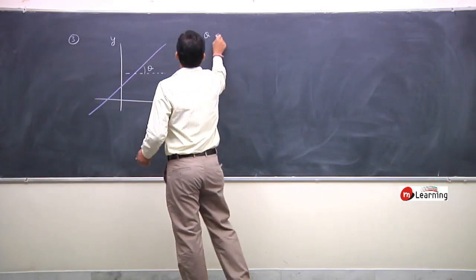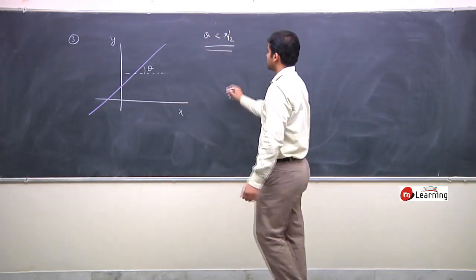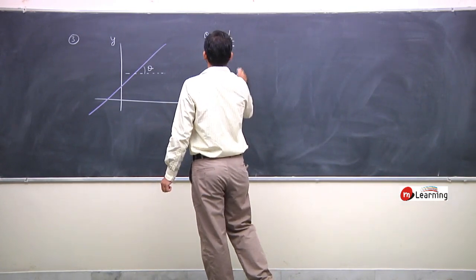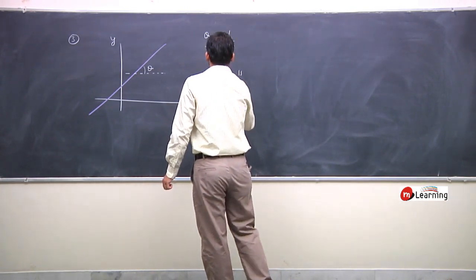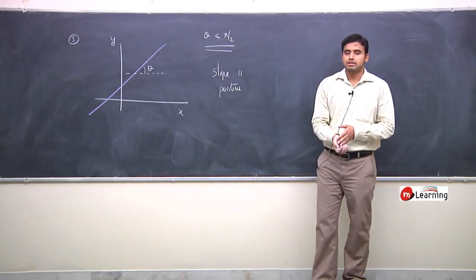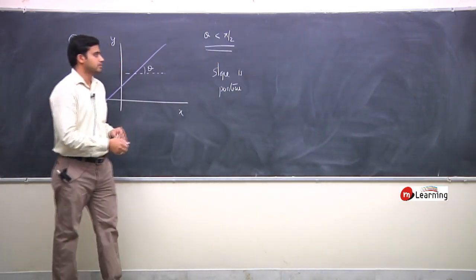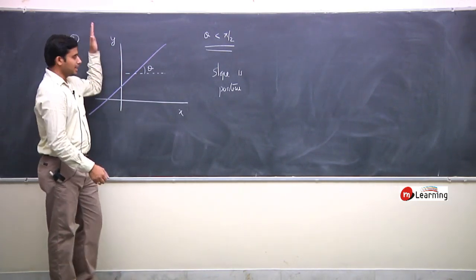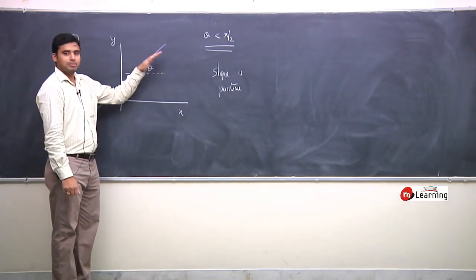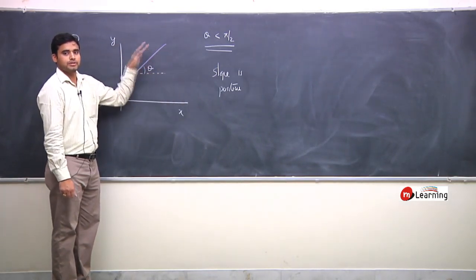If a line is parallel to the x-axis, that means the slope is positive. From 0 to 90 degrees there is the direction of the x-axis, so the slope is positive.